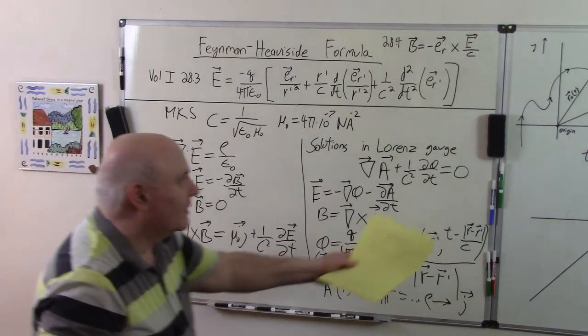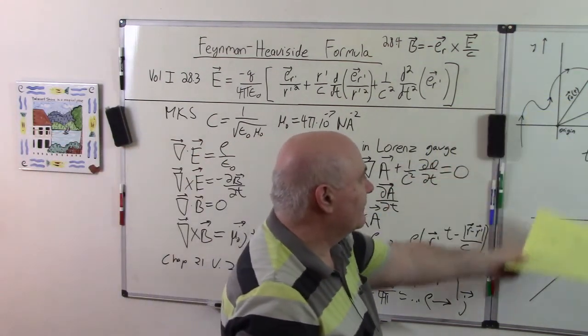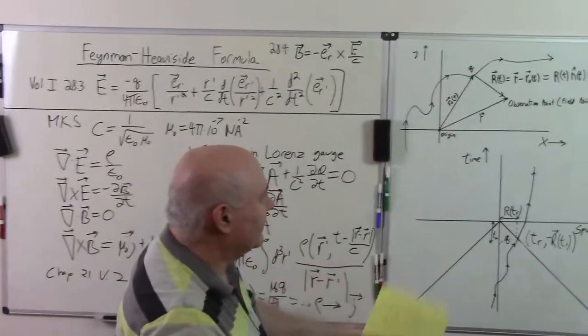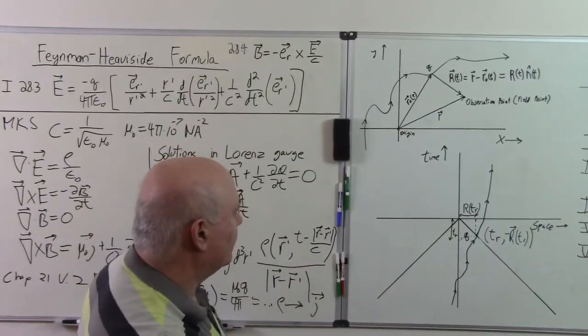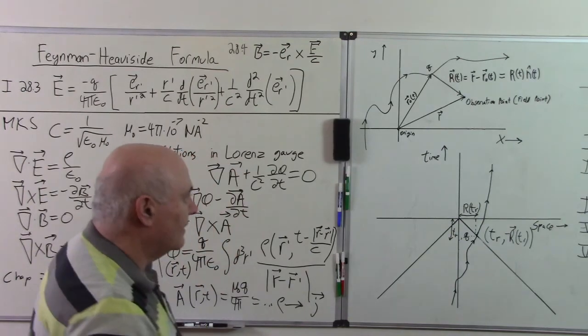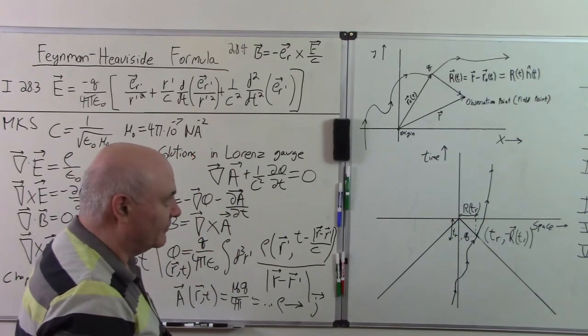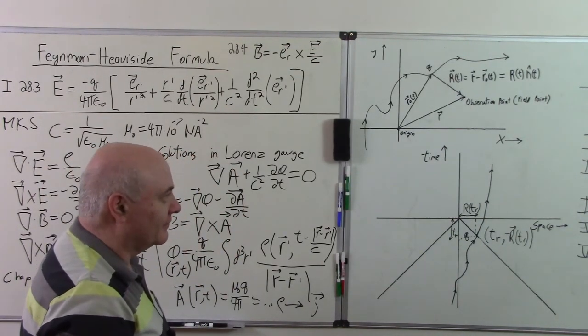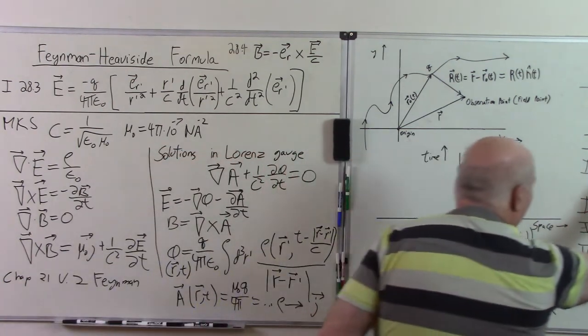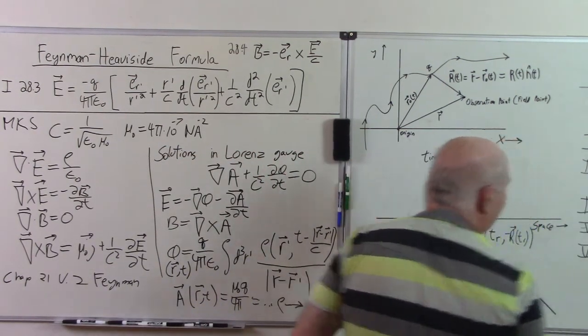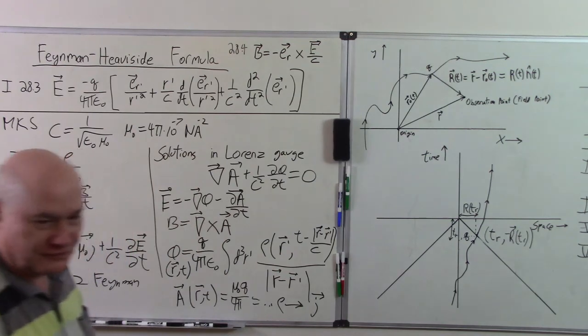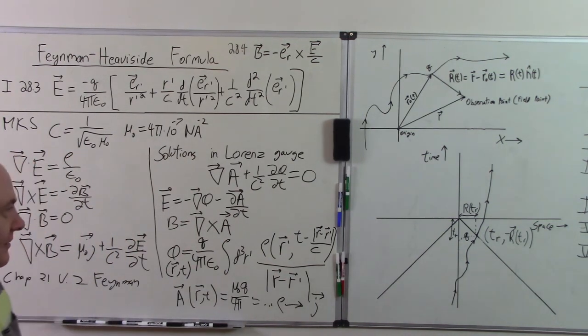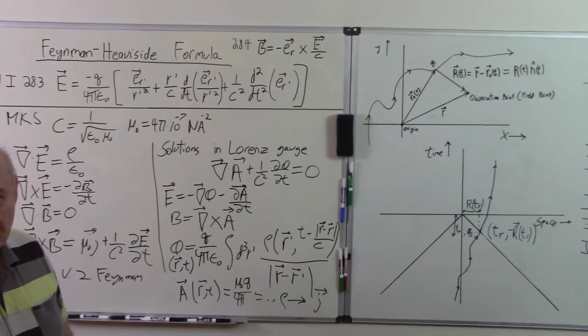And so in the next video I'm going to discuss what the retarded variables are. I'm going to set the notation and then we'll start calculating the Lienard-Wiechert potentials. I know Lienard is French, he's probably got some kind of accent over there or something. The other guy is German and I'm not sure how to pronounce his name. I'll see you in the next video. Bye-bye.